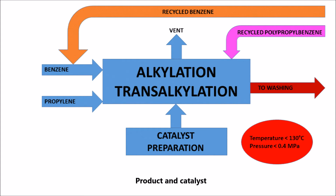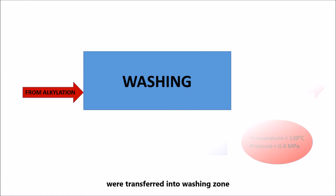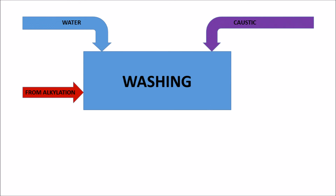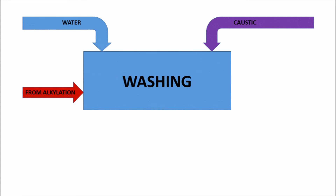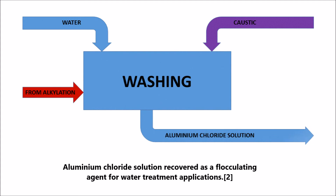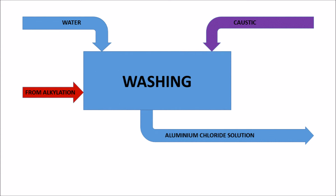Product and catalyst were transferred into the washing zone. Water and caustic were used to separate the product and catalyst. Aluminium chloride solution was recovered as a flocculating agent for water treatment applications.